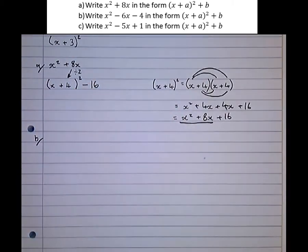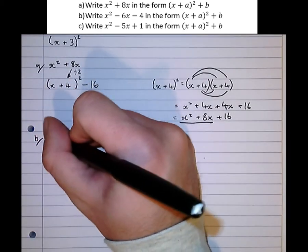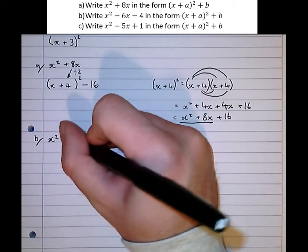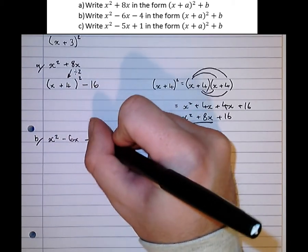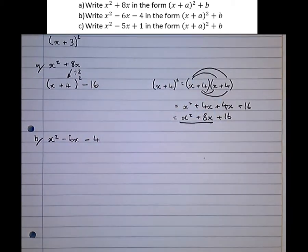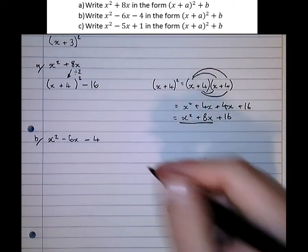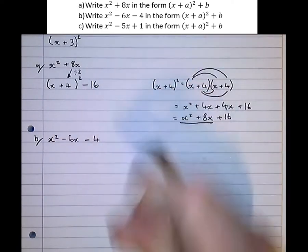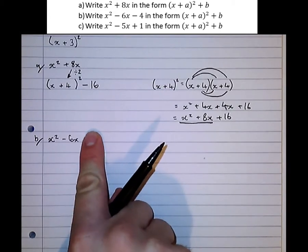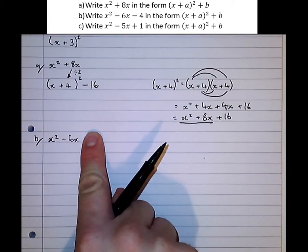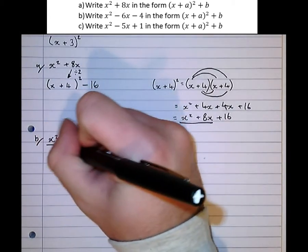Part B, let's try a slightly more complicated one: x² - 6x - 4. Now this example here is only slightly more complicated because it's got an extra term here, but what we're going to do is simply ignore this term for now. We're only going to complete the square for x² - 6x.